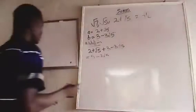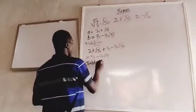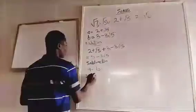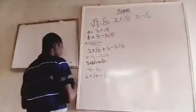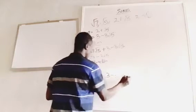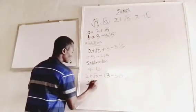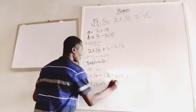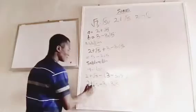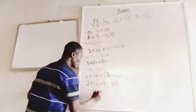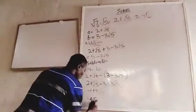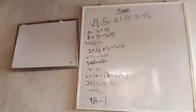Now let's subtract b from a. That is a minus b: 2 plus root 5, minus the bracket 3 minus 3 root 5. Always after a minus sign, open a bracket. This gives us 2 plus root 5 minus 3 plus 3 root 5. The real parts give minus 1, and the surd parts give plus 4 root 5. So a minus b equals 4 root 5 minus 1.